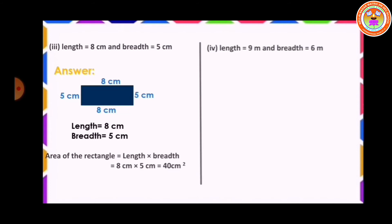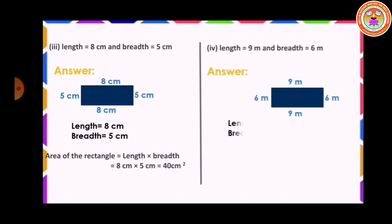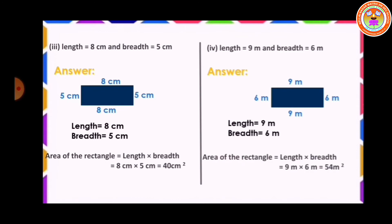Fourth sum: length equal to 9 meter and breadth equal to 6 meter. Draw one rectangle, length 9 meter, breadth 6 meter. The area of the rectangle is equal to length into breadth, that is 9 meter into 6 meter, which is equal to 54 meter square.